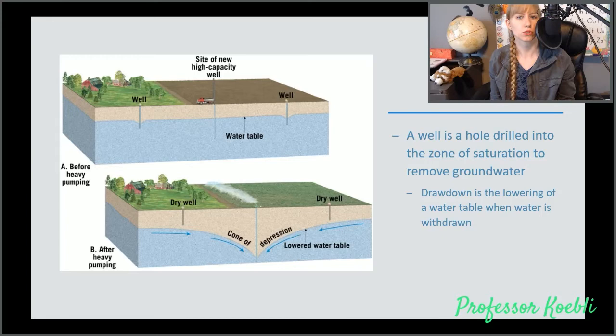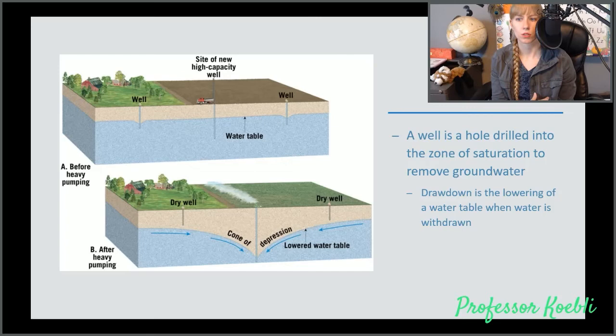Well holes get drilled into zones of saturation to remove groundwater. Drawdown is a result of when you pull water out. It is the lowering of the water table where that water is being withdrawn. That creates something called a cone of depression. If you over pump, it can become permanent.